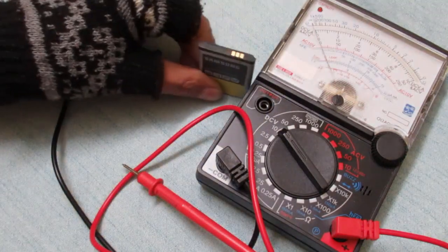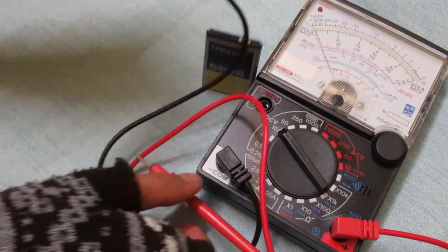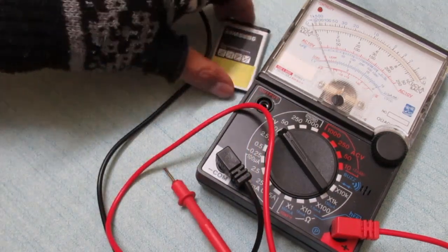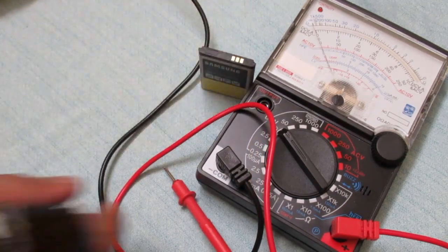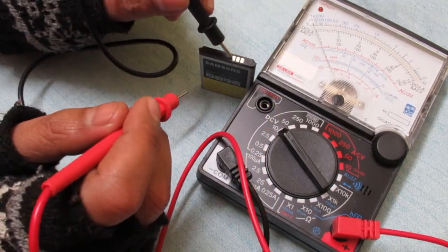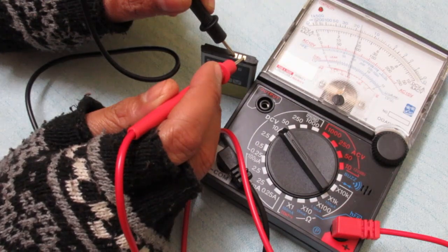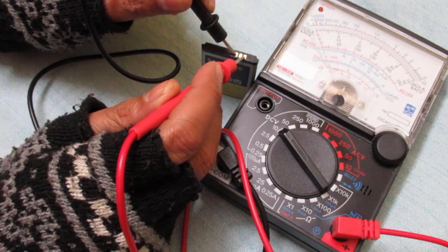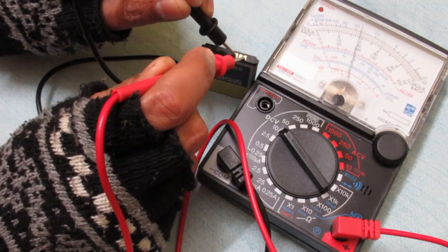And in the middle is BSI or battery temp. We need only two terminals, positive and negative, to measure DC voltage. The analog multimeter is showing approximately 3.8 volts DC.